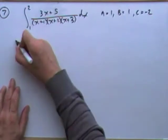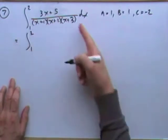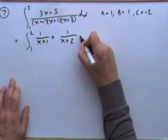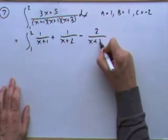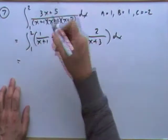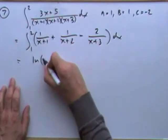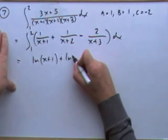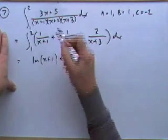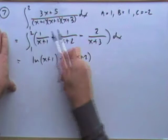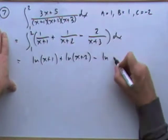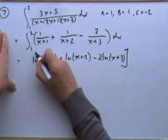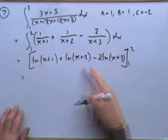Putting them back together, we go on to the integration from 1 to 2. It splits into three parts: 1/(x+1) plus 1/(x+2) minus 2/(x+3) dx. Integrating gives ln(x+1) plus ln(x+2) — the tops are just ones so nothing affects them — minus 2·ln(x+3), evaluated from 1 to 2.